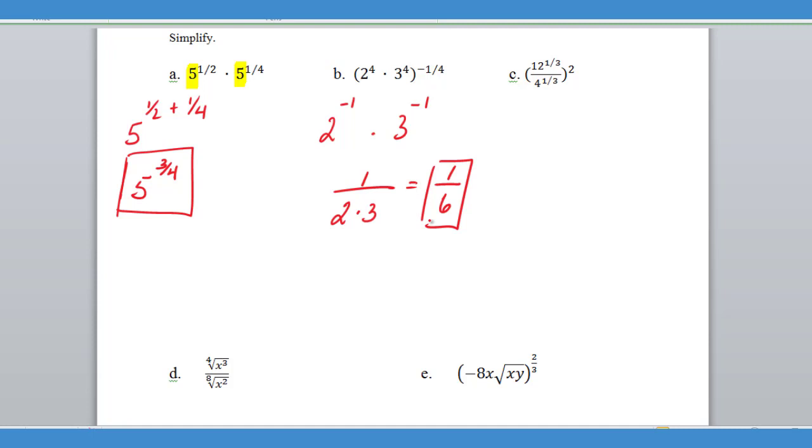All right. C is a little tricky. C is a situation where you may work backwards in the problem. First thing I'm going to do is I'm going to distribute that power of two, and of course the way it's typed up, it's a little confusing. That's a power of two outside of this. And so I'm going to have 12 to the two thirds power over four to the two thirds power. Now this is a situation where the bases aren't the same, but the exponents are.